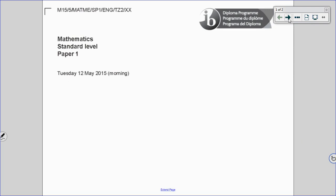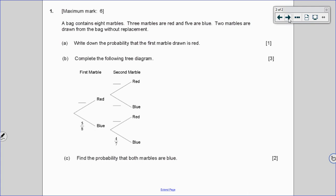The first question on the exam was a probability question, a pretty easy one, worth 6 points altogether. So a bag contains 8 marbles, 3 are red and 5 are blue, and 2 marbles are drawn from the bag without replacement. That's going to be an important word to note for Part B.